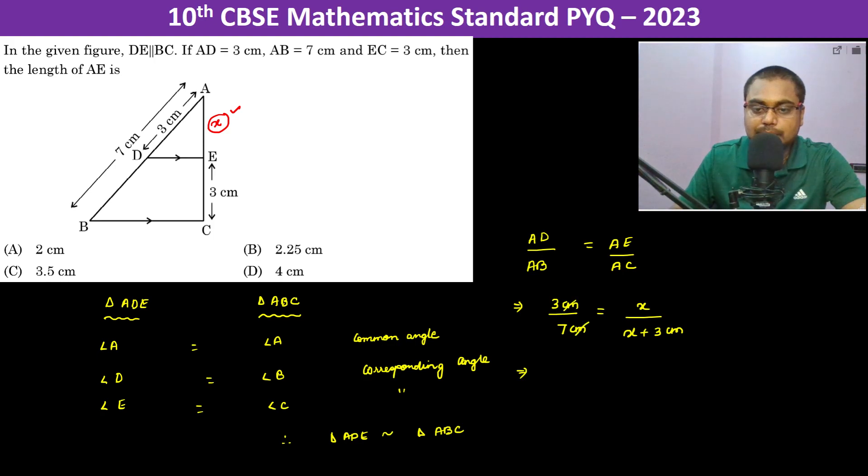Therefore, 7X is equal to 3X plus 9 cm squared. Taking terms to the other side, 4X is equal to 9 cm. Therefore, X is equal to 9 cm divided by 4, which is 2.25 cm.